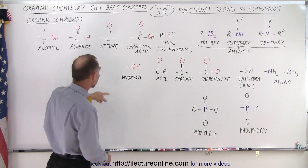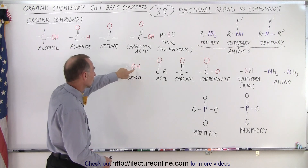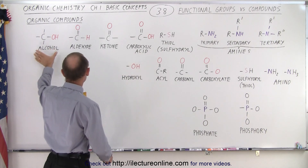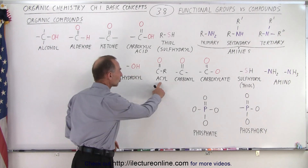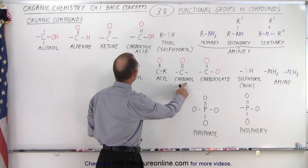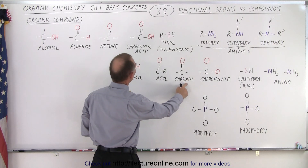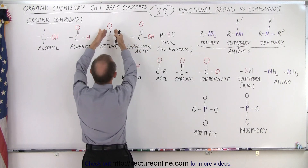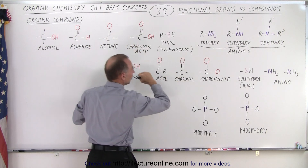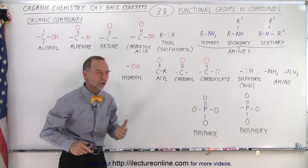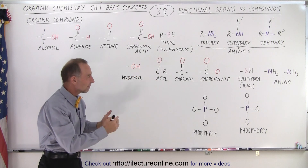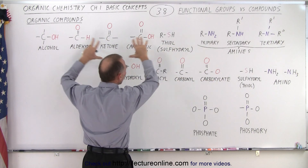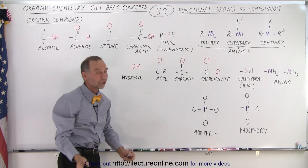Now the functional group for an alcohol is the hydroxyl group, OH. So that becomes the functional group of what makes alcohols. We have the acyl group, we have the carbonyl group. Now notice the carbonyl group will form what we call a ketone, because a ketone is where we have an oxygen double bonded to a carbon where carbon is part of a chain. So seeing the difference between what we call functional groups versus what we call compounds or molecules does make a difference.